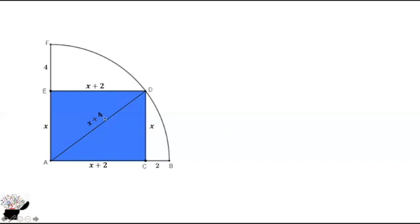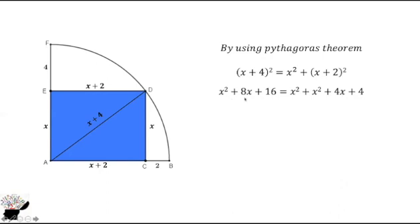Using Pythagoras theorem, we have (x + 4)² = x² + (x + 2)². We expand the brackets to get x² + 8x + 16 = x² + x² + 4x + 4. We subtract x² from both sides of the equation to get x² - 4x - 12 = 0.